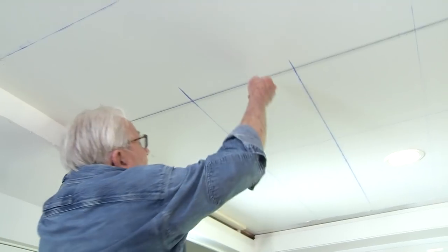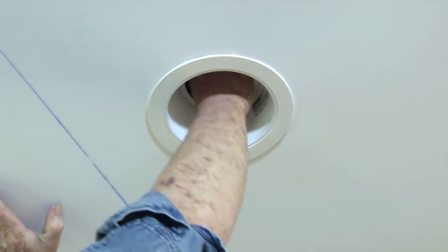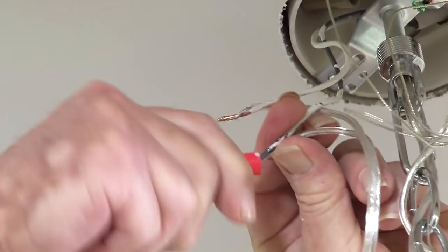Next, we strike lines perpendicular to the joists at 18-inch intervals to indicate where the tracks will be located. Also, we remove the trim rings on the recessed lights and take down any hanging fixtures.